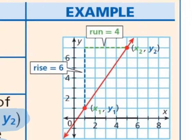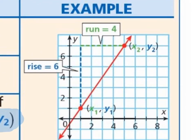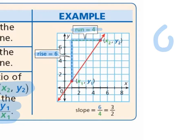So if we look here, our rise is 6 because we're going up 1, 2, 3, 4, 5, 6. So our rise would be 6, and our run would be 1, 2, 3, 4. So here we would have 6 over 4. Can we simplify 6 over 4? Yes — 3 over 2. So the slope of this line would be 3 over 2.